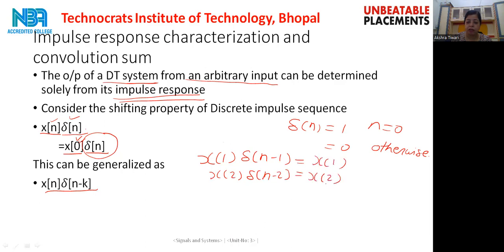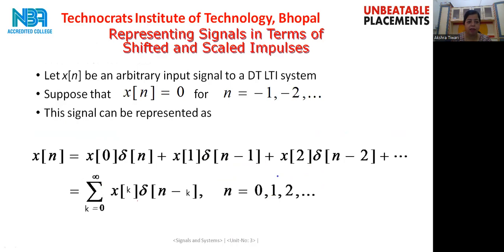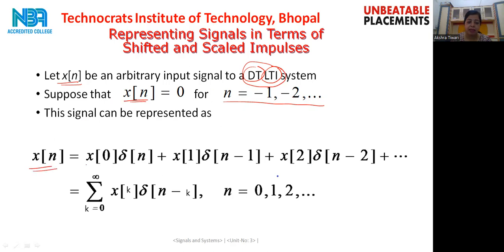In general terms, this gives you x1, x2, and so on. So in general terms, you can write it as xn·δ(n−k), which equals xk·δ(n−k). Now we apply an arbitrary input signal xn to our discrete time LTI system — DT stands for discrete time and LTI for linear time invariant. We have assumed that xn equals 0 for all values of n less than 0. So we can represent xn as x(0)·δ(n) + x(1)·δ(n−1) + x(2)·δ(n−2) + ..., or in general, as summation for k equals 0 to infinity of xk·δ(n−k).